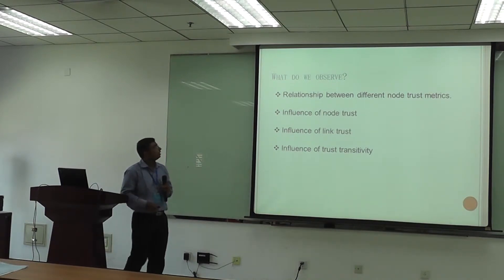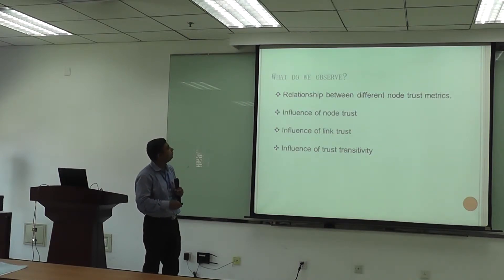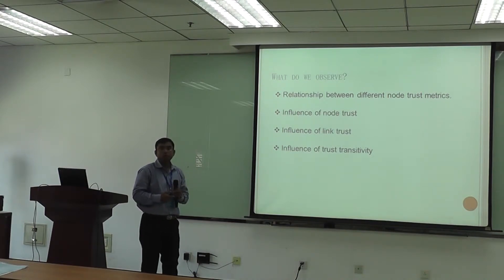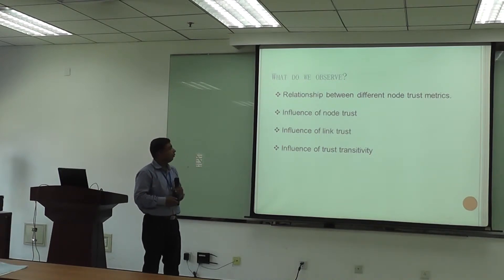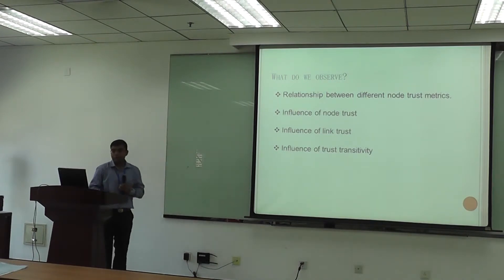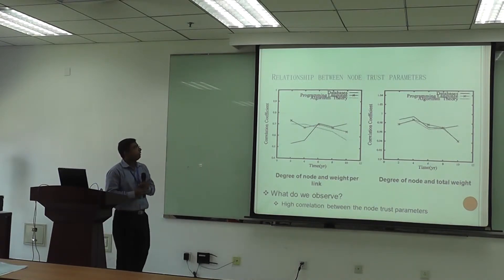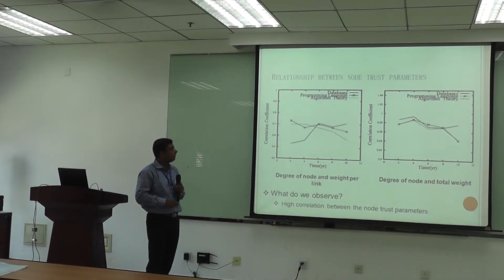What we observe is the relationship between the different node trust matrices. We try to find out the influence of node trust in network evolution, the influence of link trust in network evolution, and then the influence of trust transitivity.